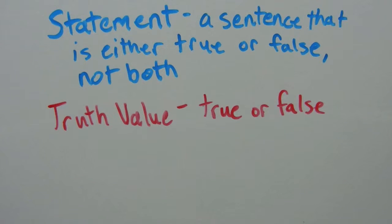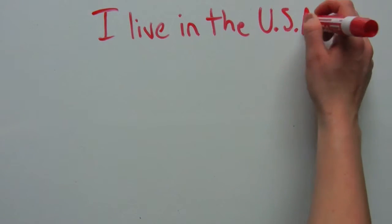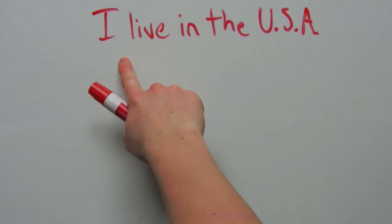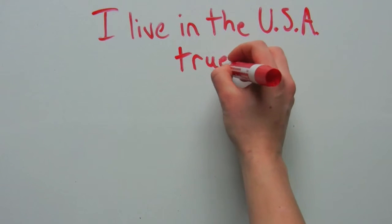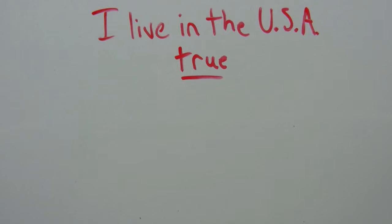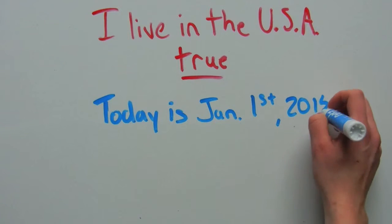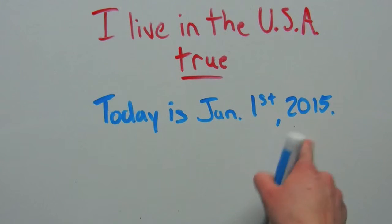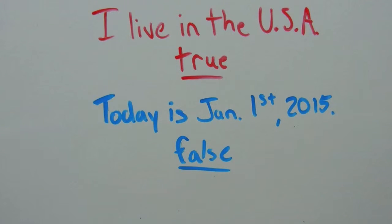Let's look at an example of a statement that's true and a statement that's false. Our first statement: 'I live in the USA.' This statement is true — I do live in the United States of America. Our second statement: 'Today is January 1st, 2015.' This statement is false. Today's date is actually February 4th of 2016.